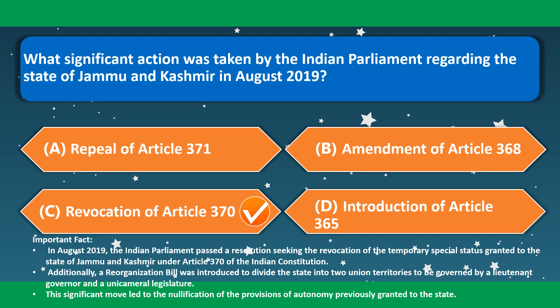What significant action was taken by the Indian Parliament regarding Jammu and Kashmir in August 2019? This is the Revocation of Article 370. In August 2019, the Indian Parliament passed a resolution seeking the revocation of the temporary special status granted to Jammu and Kashmir under Article 370. A reorganization bill was also introduced to divide the state into two Union territories, nullifying the provisions of autonomy previously granted to the state.